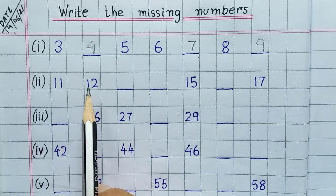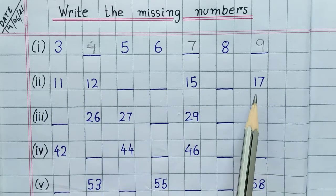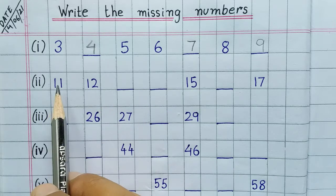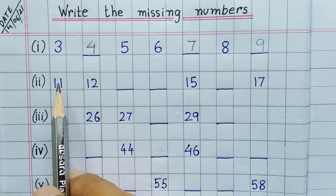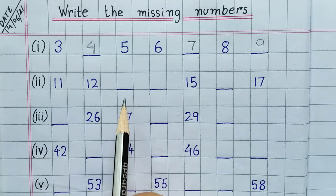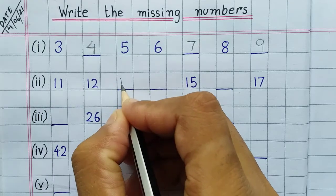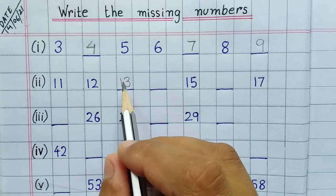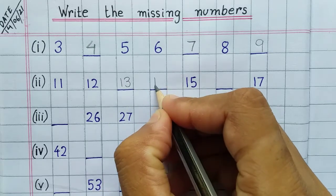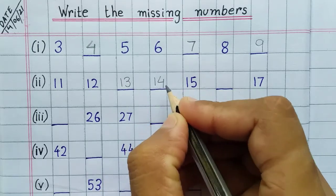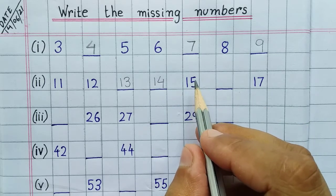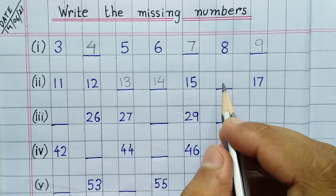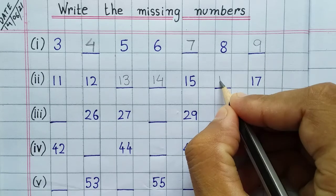So we'll count the numbers from eleven: eleven, twelve, thirteen. Here thirteen is missing, so we'll write thirteen. After thirteen we get fourteen, fifteen. After fifteen we get sixteen, so let us write sixteen.